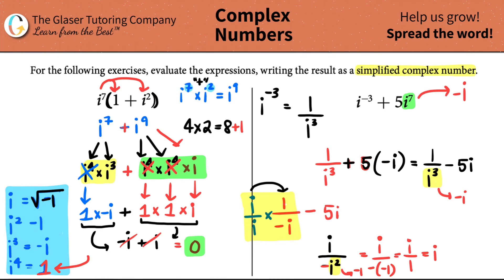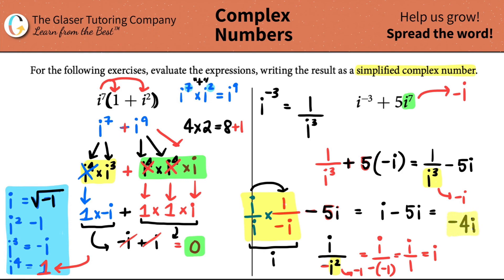Now I know that whole fraction simplifies to just i. So I have i minus 5i — there's a coefficient of 1 here — so 1 minus 5 gives negative 4i. And that's the final answer in simplified complex form.